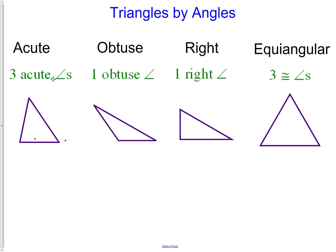With an obtuse triangle, we need one angle of the triangle to measure more than 90 degrees. We cannot have it possible for more than one angle to be obtuse. We just need one. Remember, obtuse means more than 90 and less than 180.